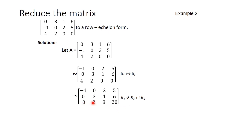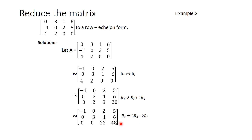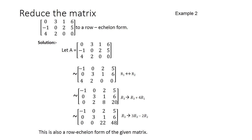The third row second element is not zero, so we apply the operation R3 → 3R3 - 2R2, which gives the third row as 0, 0, 22, 48, keeping the other two rows as they are. Now the first row first element is non-zero, the triangle form is zero, and the number of zeros in the last row is greater than in the previous row. All three conditions are satisfied, so this matrix is in row echelon form.